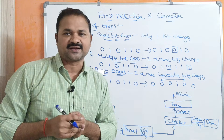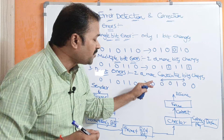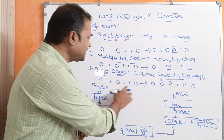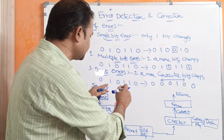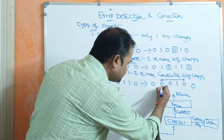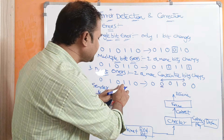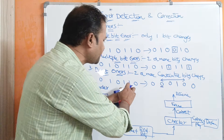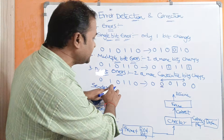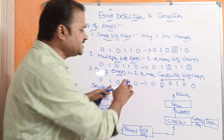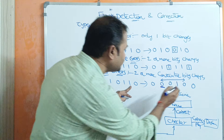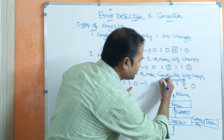The third type is burst error. Burst also means two or more, but here the bits are consecutive bits — so two or more consecutive bits change. Let the sender send this message whereas the receiver receives this message. If we observe: the first bit is the same, the second bit is changing, the next two bits are same, whereas the next bit is changing from one to zero, and the last bit is zero. So the second, fourth, and fifth bits got changed. The first changed bit and the last changed bit define the burst — this entire length is called a burst.